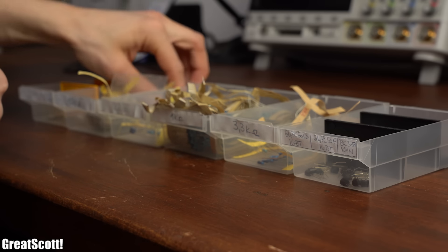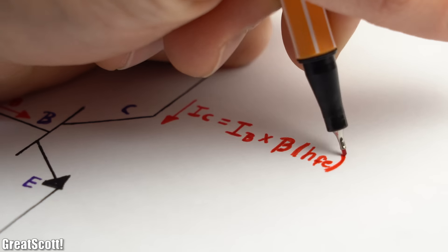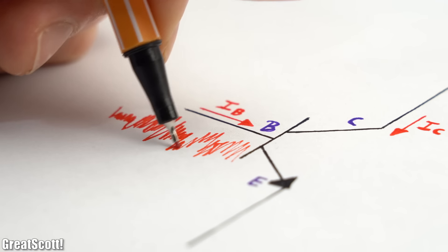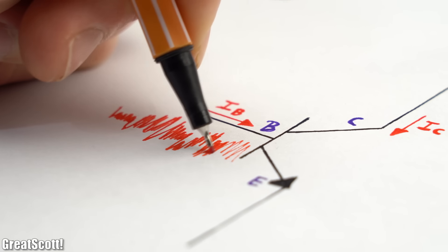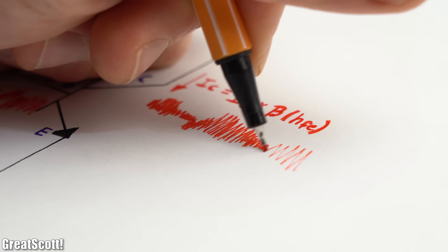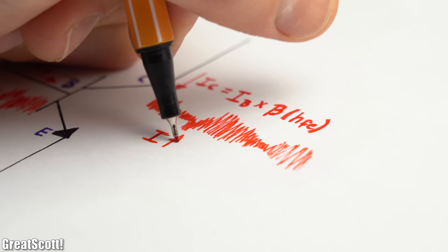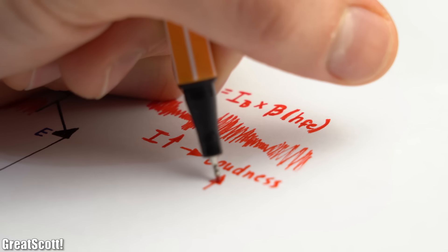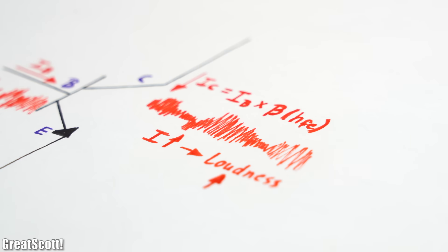But in a nutshell, we can say that when a base current is flowing, then a collector current can flow with a value of the gain factor multiplied by the base current. So if the base current is a music signal, then the collector current will also be a music signal, but with a higher current value, which is basically the loudness amplification we are looking for.